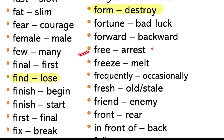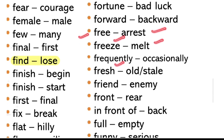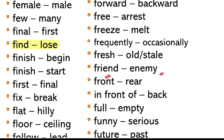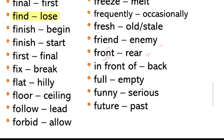Free aur arrest. Freeze aur melt. Frequently hai, occasionally hai. Fresh hai, old hai — stale hai, khana stale ho gya hai. Friend hai, enemy hai. Front hai, rear hai.